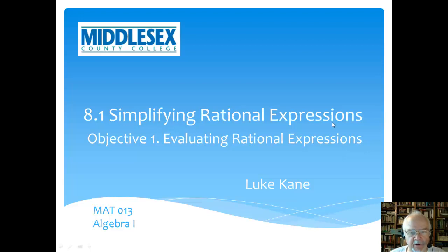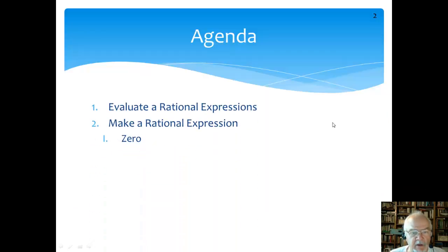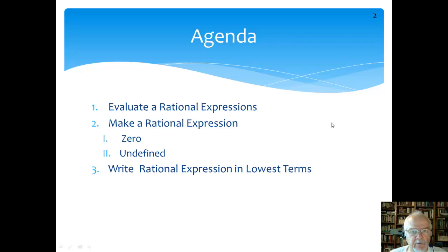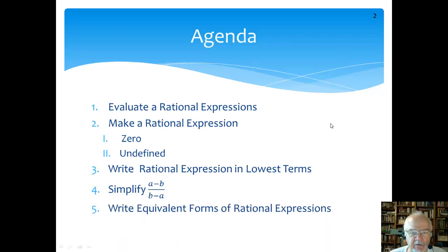The first objective is evaluating rational expressions, and we'll do that in this video. In the next video, we'll look at making rational expressions equal to zero or undefined — that corresponds to Objective 2, Chapter 8, Section 2. In the third video, we're going to write rational expressions in lowest terms. In the fourth video, we're going to look at a special case of a rational expression and simplify that. And in the fifth and final video, we're going to look at equivalent forms of rational expressions.